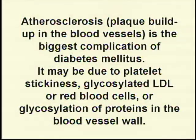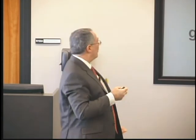Atherosclerosis — we're building up plaque in the blood vessels, and it can come from any number of different ways. This is the single biggest complication of diabetes mellitus. This is where amputations take place because blood can't get to the tissue, oxygen can't get to the tissue, and exchange of toxic waste can't get out.